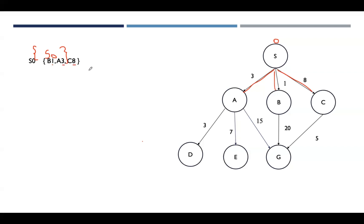Out of these three nodes, we select the one with the lowest cost for expansion, which is B1. Finding adjacent nodes of B, there is only one: G. The cost to G from the start node is 1 plus 20, which equals 21.